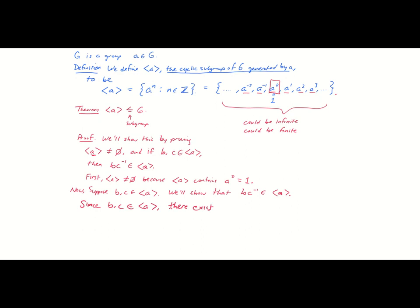two integers here, M and N, both integers such that B equals A to the M and C equals A to the N. Because that's what it means to be in this set. It means that there is some integer, here we're calling it N in the definition, but we can call it whatever we like. Could call it M, could call it N.